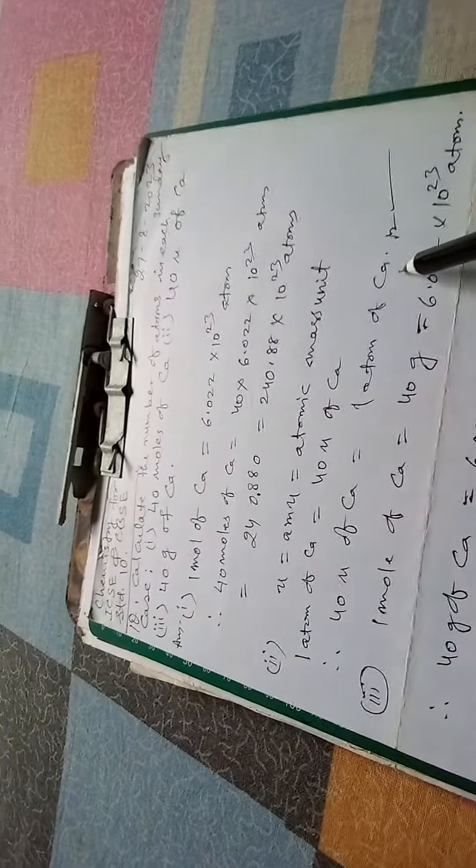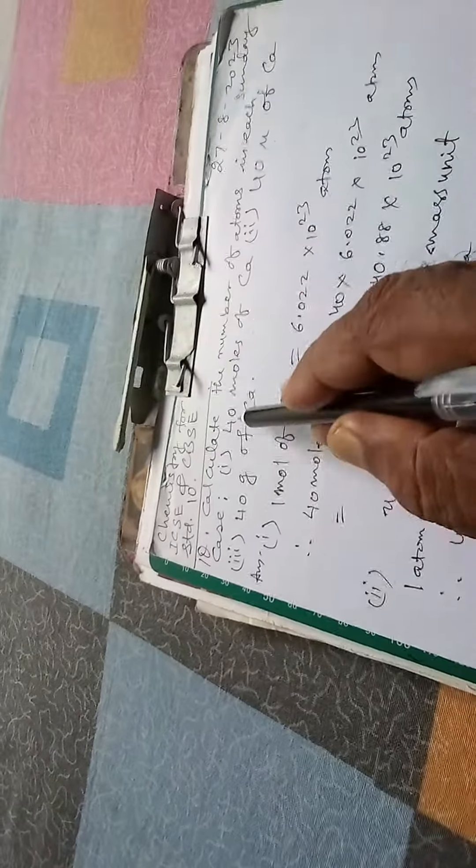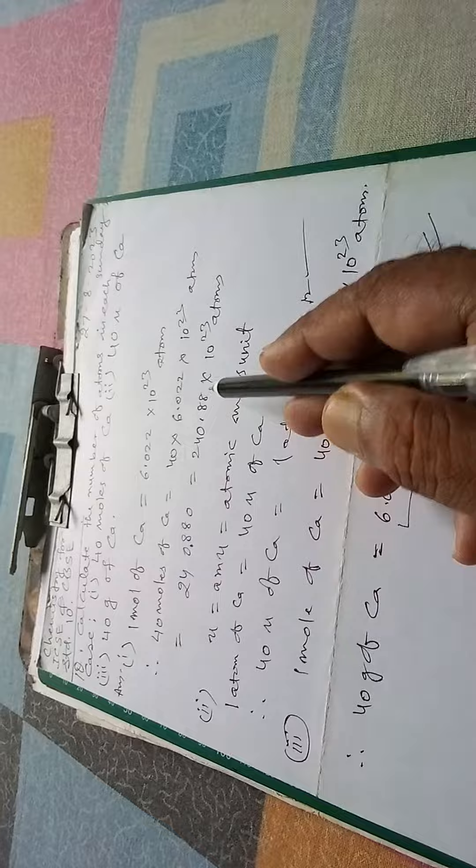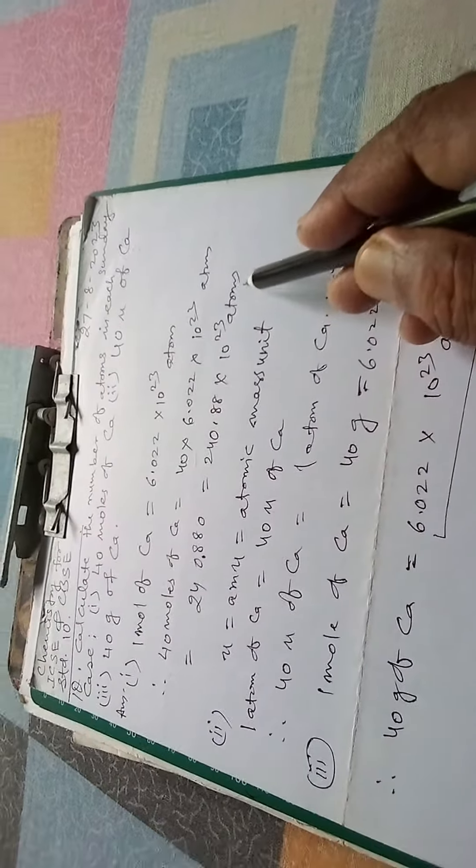So in the third case, 40 grams of calcium contains this much atoms. In the second case, 40 U of calcium contains 1 atom of calcium. And in the first case, 40 moles of calcium contains 240.88 into 10 to the power 23 atoms of calcium.